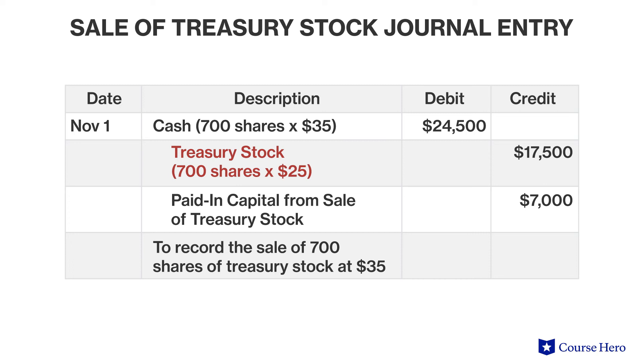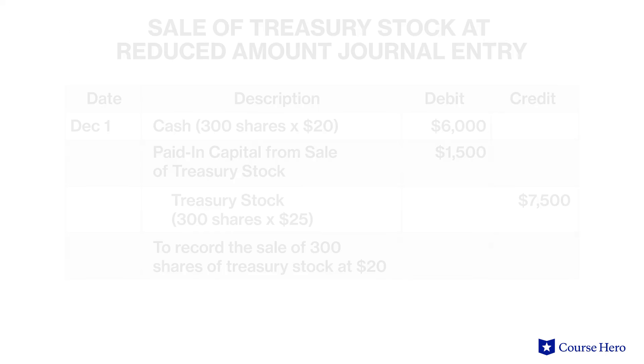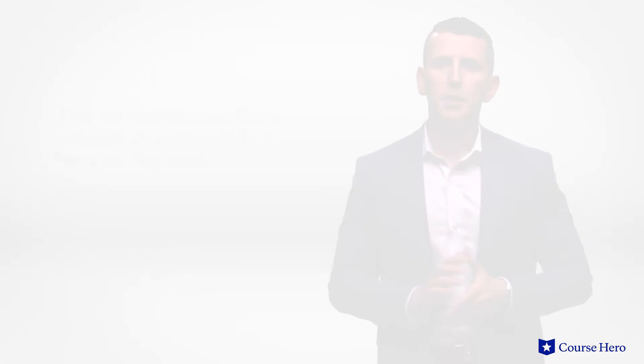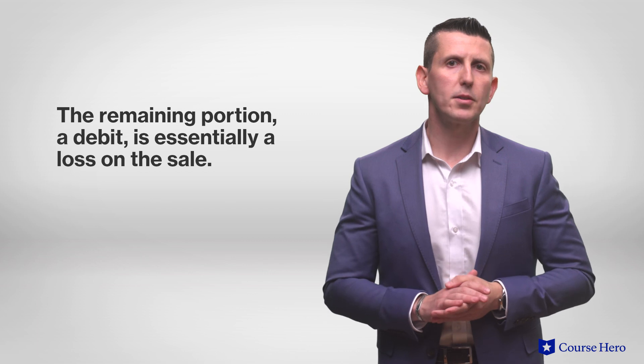What if treasury stock sells at a price below what the company previously paid? Suppose that the company sells the remaining 300 treasury shares for $20. Cash would go up with a debit of $6,000. Treasury stock is then reversed to the extent of 300 shares at the price paid for those shares, $25, resulting in a credit to treasury stock of $7,500. The remaining debit is essentially a loss on the sale. To the extent that the account called paid-in capital from the sale of treasury stock has a positive balance, that loss is debited against that account. If that account had a zero balance, that loss would be debited against retained earnings.